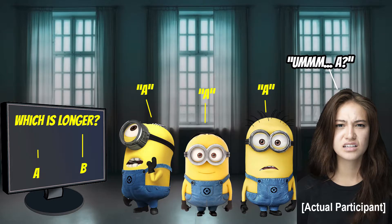For instance, in the classic Asch Conformity experiment, participants lined up and were asked to tell which of two marks on a screen were longer. However, only the participant at the very end of the line was the real participant. The rest of the people in line were all Confederates. The main point of the study was to see if individuals would go along with the consensus of the group when the group was answering with an obviously wrong answer.